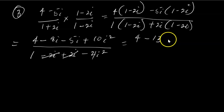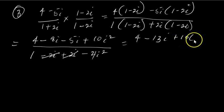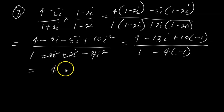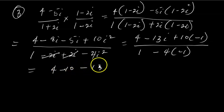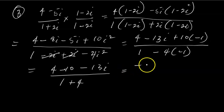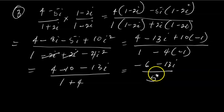In the denominator, -2i + 2i becomes 0, so the conjugates are playing their role. Expanding the numerator: 4 - 8i - 5i = 4 - 13i, plus 10i² = 10 × (-1) = -10. The denominator becomes 1 - 4i², and since i² = -1, that's 1 - 4 × (-1) = 1 + 4 = 5. The numerator simplifies to 4 - 10 - 13i = -6 - 13i.